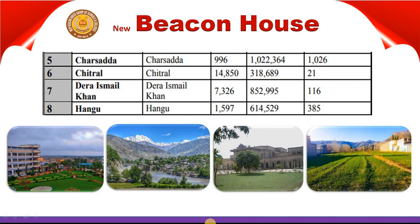The seventh district is Dera Ismail Khan. Its headquarter is also in Dera Ismail Khan. It has an area of 7,326 km², a population of 852,995, and a density of 116 people per km².